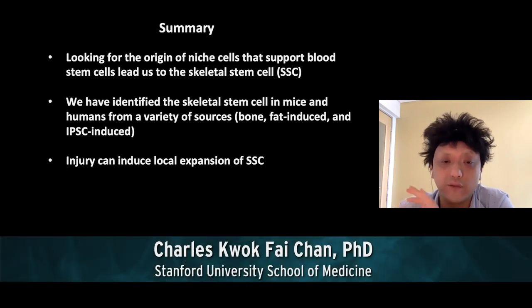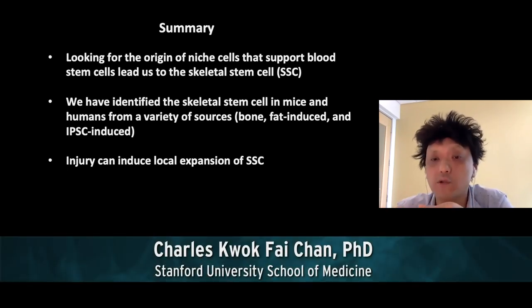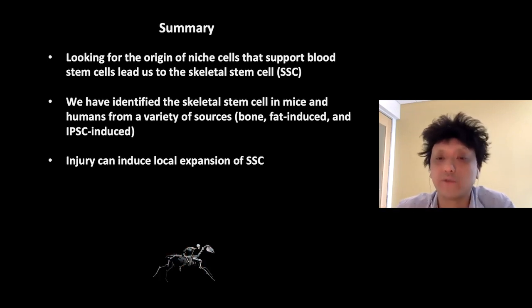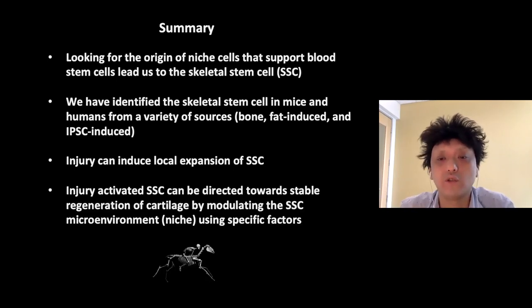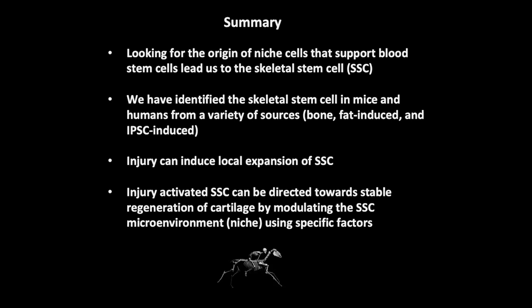Injury can induce a local expansion of stem cells, but these activated skeletal stem cells, although they have the ability to turn into all of the different types of skeletal tissues, do require specific signaling cues delivered into the microenvironment in adults. Our finding that stem cell-induced regeneration can still occur in a type of tissue normally thought not to have any regenerative potential is leading us to ask whether other types of poorly regenerative tissue — such as the heart — could also potentially be induced to regenerate using this paradigm.